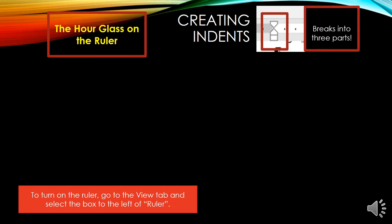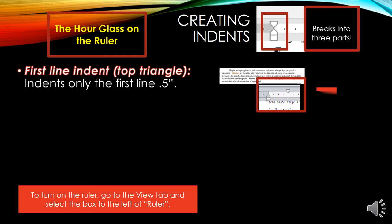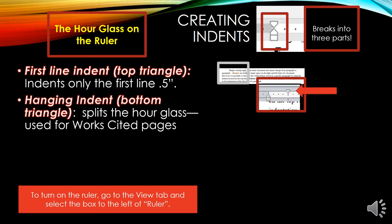Creating indents. On the ruler, you are going to see an hourglass, which is used to set indents. The hourglass breaks into three parts. The first line indent is the top triangle, and indents are normally set at 0.5. In the example, I took the first line indent and moved it to 0.5, splitting the hourglass. You'll see that only the first line of the paragraph was moved to 0.5.